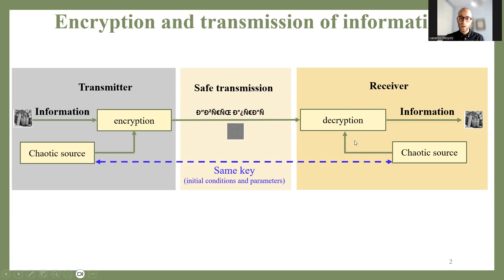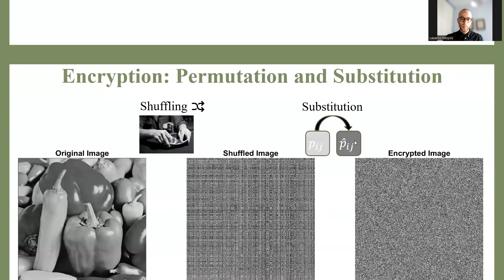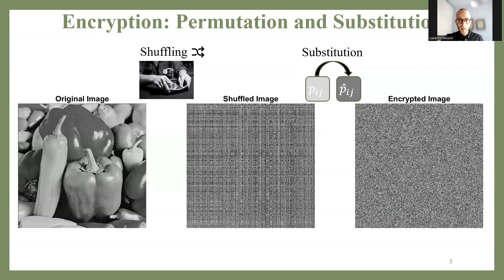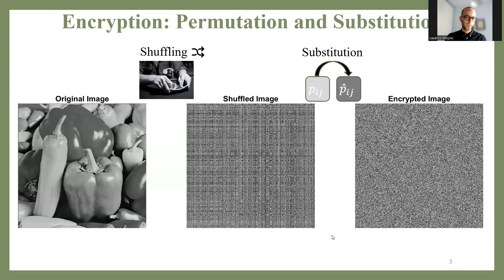The most common processes we consider are shuffling of the image pixels — pretty much like shuffling a deck of cards — and substitution of the pixel values, where we take each individual pixel and replace its value with another value.